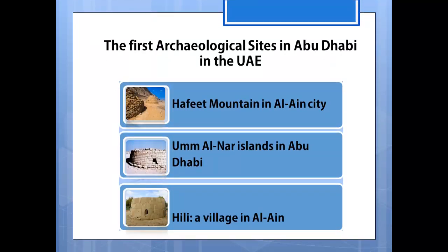These are the three archaeological sites found in the Emirate of Abu Dhabi in the UAE. The first one is the Hafeet Mountain in Al Ain city. Second is the Umallar Islands in Abu Dhabi. And third is Hili, which is actually a village in Al Ain.